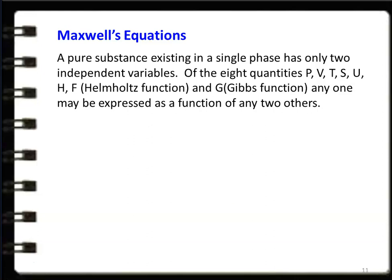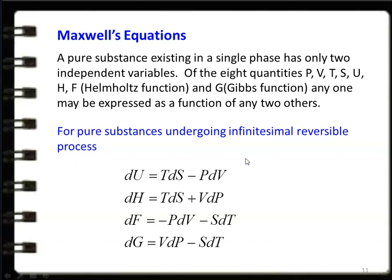Maxwell's equations — derivation. A pure substance existing in a single phase has only two independent variables. Of the eight thermodynamic quantities — pressure, volume, temperature, entropy, internal energy, enthalpy, F (Helmholtz function), and G (Gibbs function) — four important equations are: du = T ds − p dv; dh = T ds + v dp; df = −p dv − s dT; dg = v dp − s dT. These are the four important equations for pure substance.